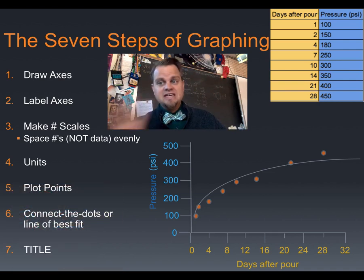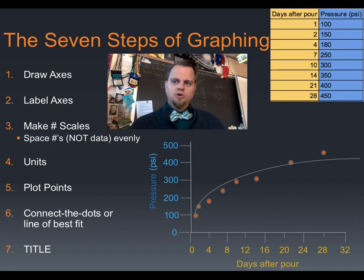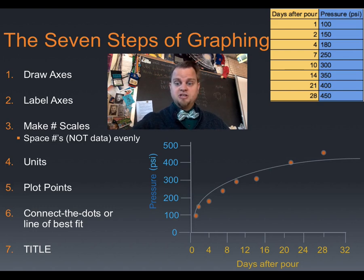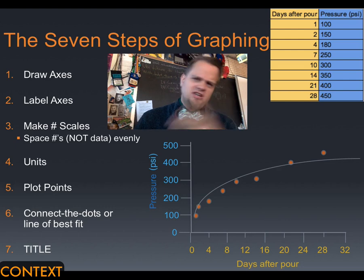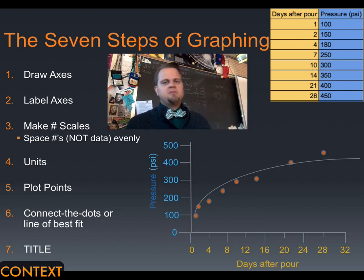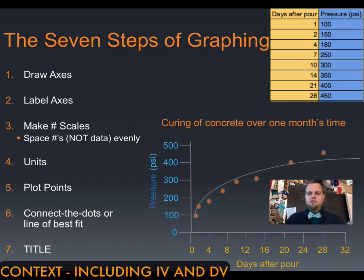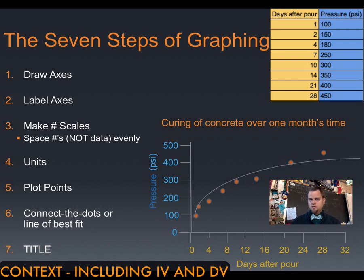You need a title. The title is not just 'days after pour versus pressure' — nothing as obvious as that. What you're doing when you write that is essentially insulting the reader, because they can already read the x and y axes. So let's give them context: what you were testing, including the independent and dependent variable. For example: 'curing of concrete over one month's time.' This is a good title because it gives the idea of the experiment — we're testing the curing of concrete — and it includes the independent variable (days after the pour) and the dependent variable (how cured the concrete is).